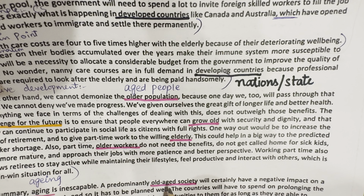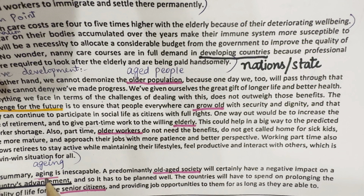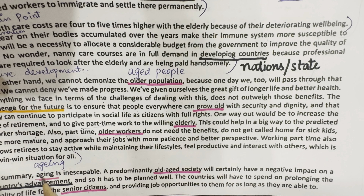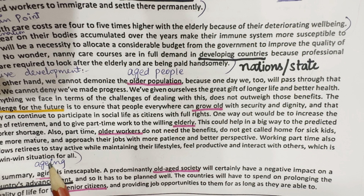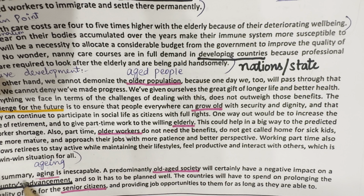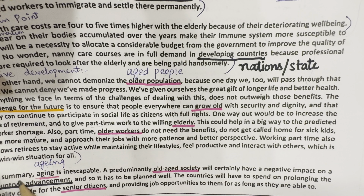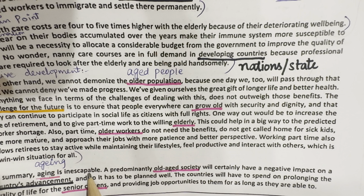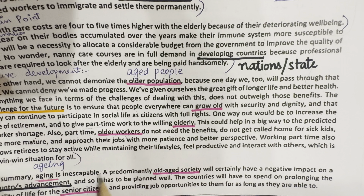For 'old people,' you can also write 'aged people' or 'older population.' For example: 'We cannot demonize the older population because one day we too will pass through that stage.' You can also use 'grow old': 'The challenge for the future is to ensure that people everywhere can grow old with security and dignity.'